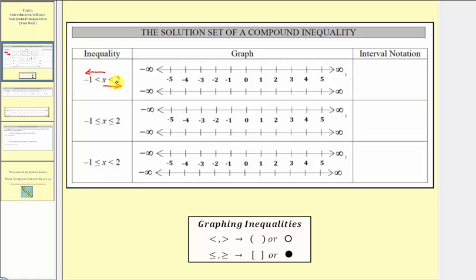So here x is between negative one and positive two, not including the endpoints. Let's go ahead and graph this solution set. Remember, if we have a less than or greater than symbol, we graph using either rounded parentheses or open points. If we have less than or equal to or greater than or equal to, we would graph using square brackets or closed points, and we'll show both.